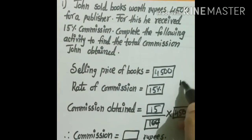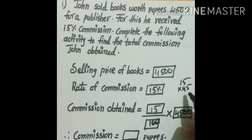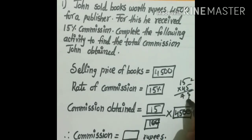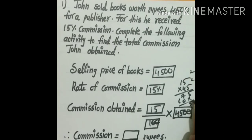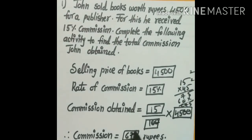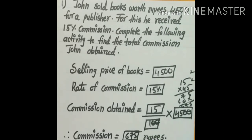Calculating 15 × 45: 5 × 5 = 25, carry 2; 5 × 1 = 5 + 2 = 7; 4 × 5 = 20, carry 2; 4 × 1 = 4 + 2 = 6. So 15 × 45 = 675. Therefore, commission = ₹675. This is how we complete the activity.